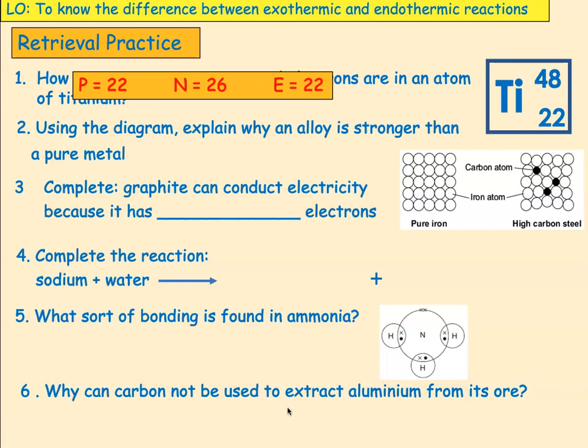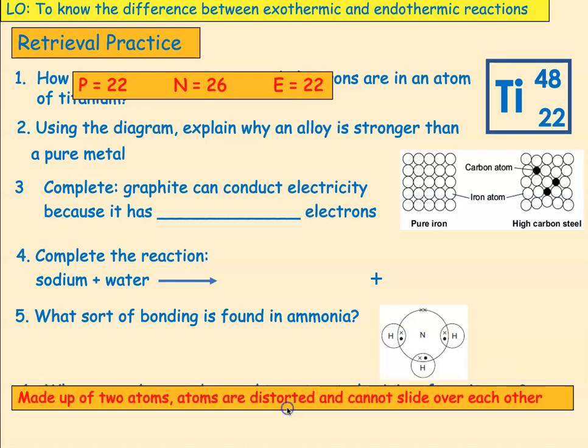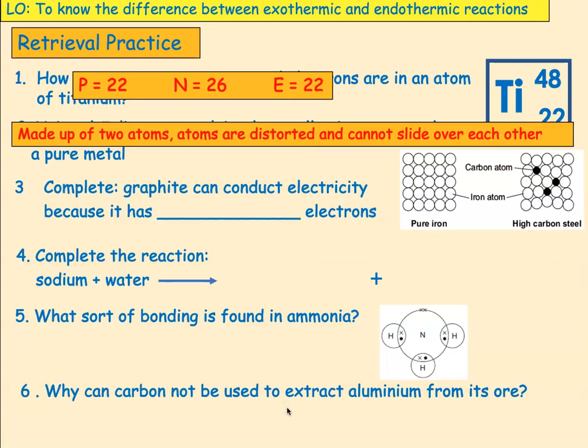Using the diagram, explain why an alloy is stronger than a pure metal. If you look at the pure metal, all the atoms are the same size and they're all arranged in layers, and those layers can slide over each other. If you look at the alloy — high carbon steel — you've got two different sorts of atom and they're both different sizes, so all the layers are distorted and those layers can't slide over each other. So the answer is: it's made of two types of atom; the atoms are distorted and cannot slide over each other.